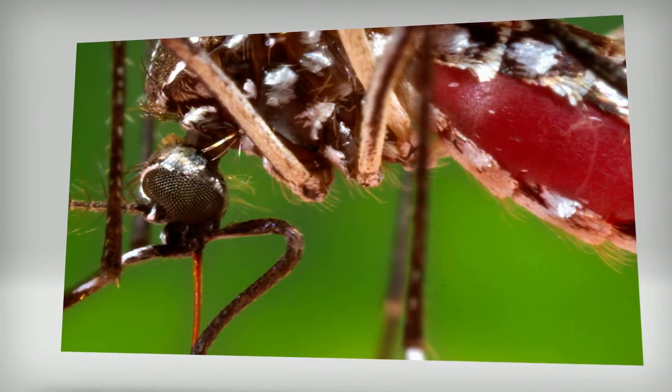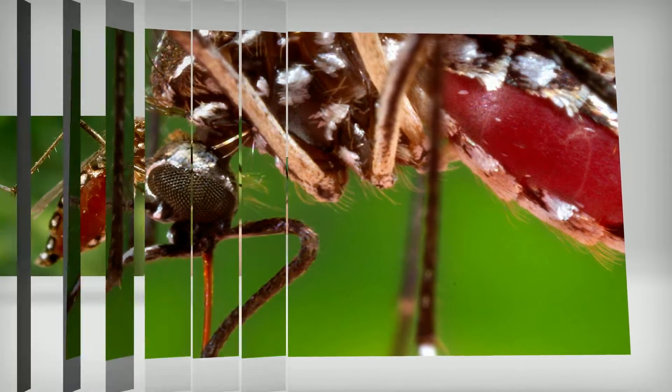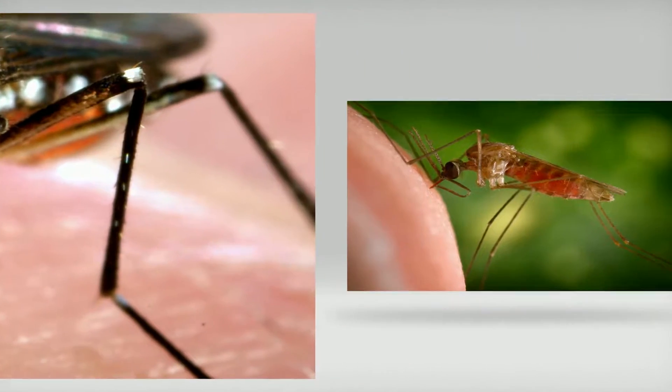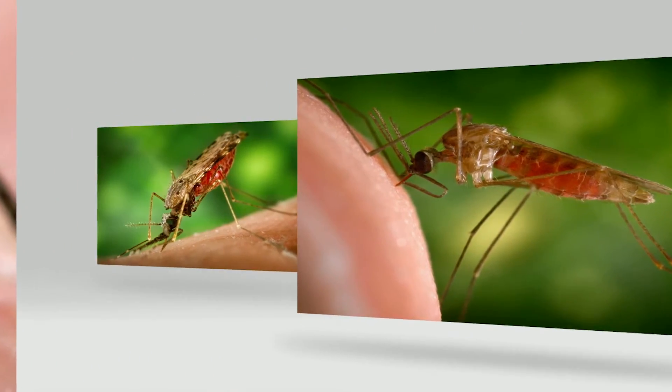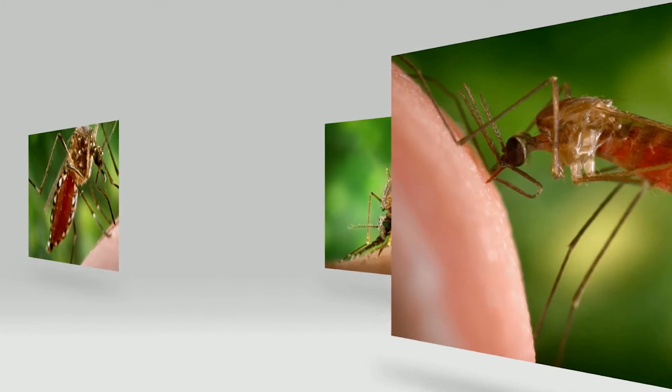In addition, Wolbachia can prevent pathogenic viruses such as dengue virus and zika virus from replicating in mosquito hosts. This combination of infertility and RNA virus inhibition is in the vanguard of control efforts to suppress mosquito populations.